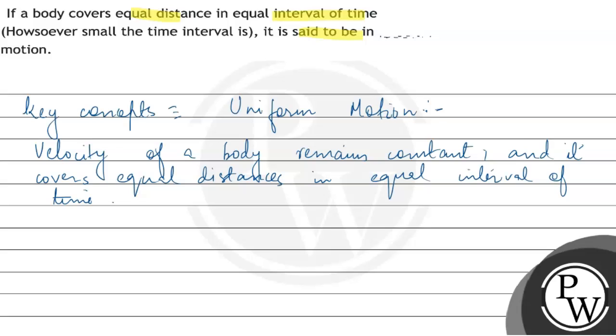In uniform rectilinear motion on a straight line, the acceleration of a body is zero.